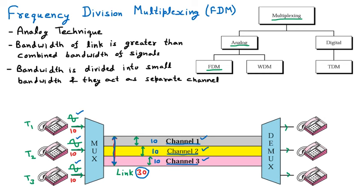So what we have learned through this diagram: first, frequency division multiplexing is an analog technique. Second, the channel capacity through which we are sending the multiplexed data should be greater than the combined bandwidth of all devices' data. Third, that channel capacity is hypothetically divided into small parts and they act like separate channels. This is a hypothetical division — it is not physically divided, but we assume it is divided like this.